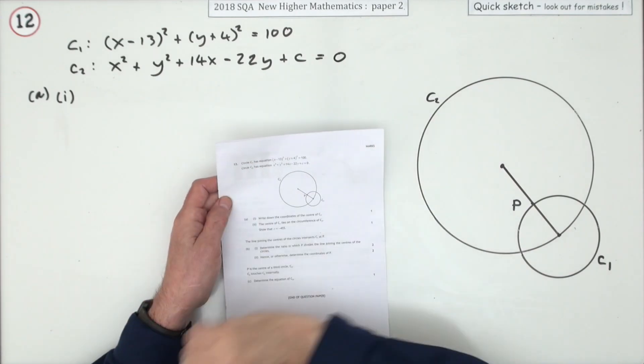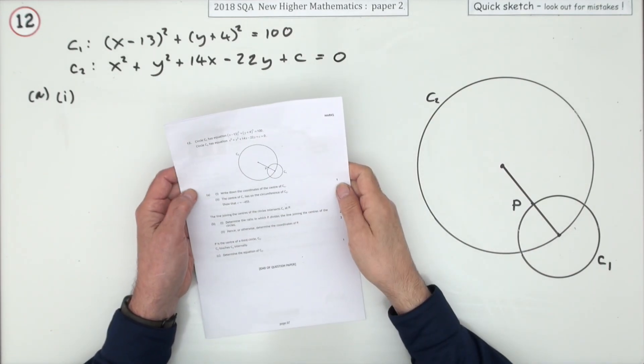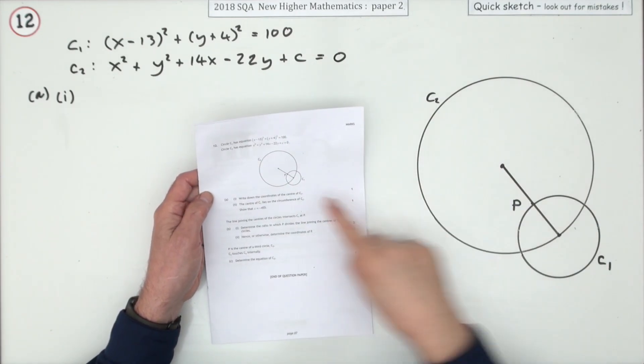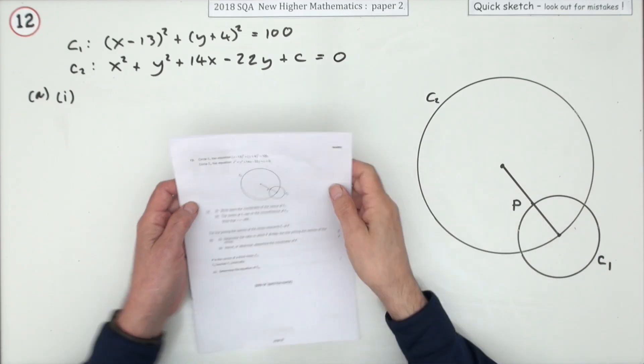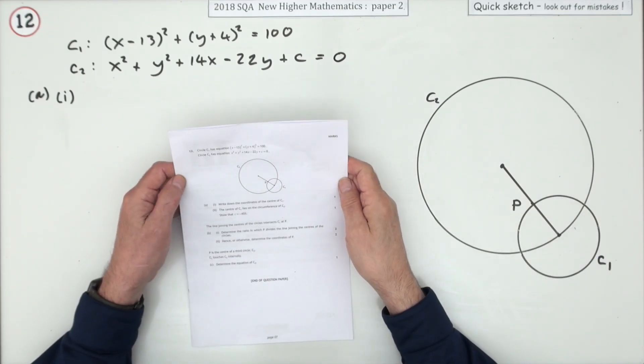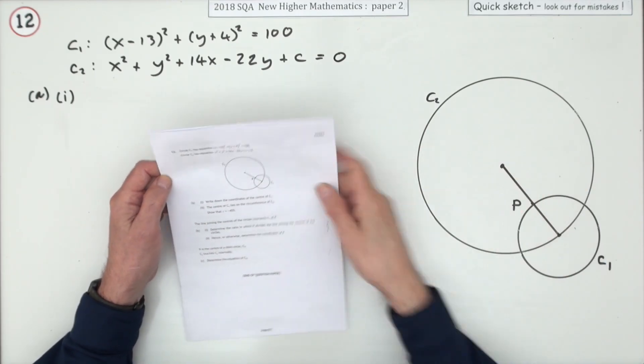Number 12, the last question from paper 2 in the 2018 higher maths circles question. It's actually quite reminiscent of a circles question from just a couple of years ago about a smaller circle in relation to a bigger circle.